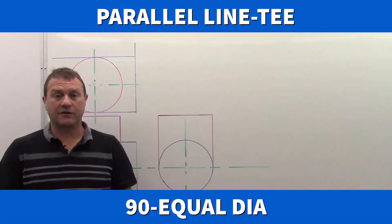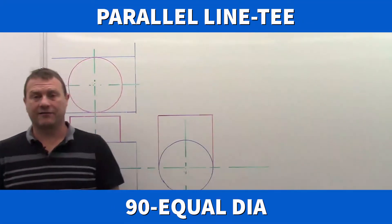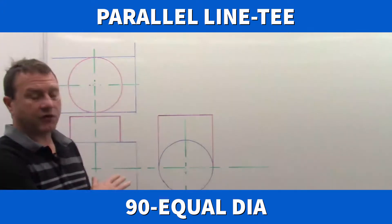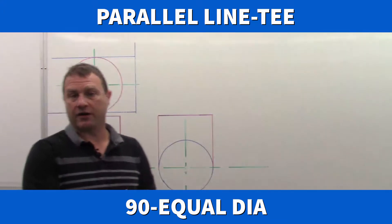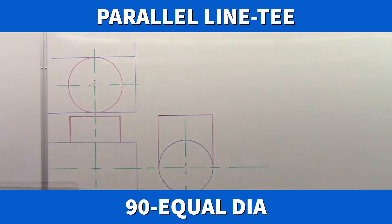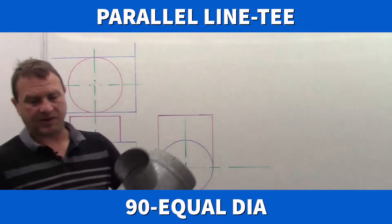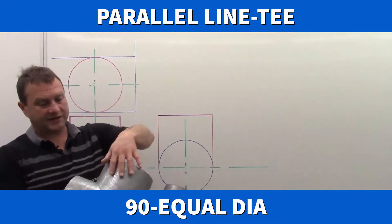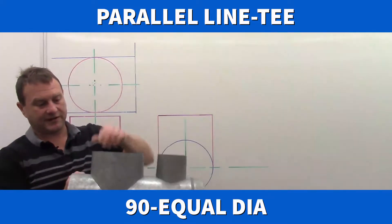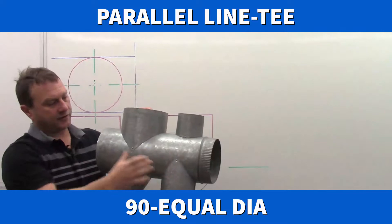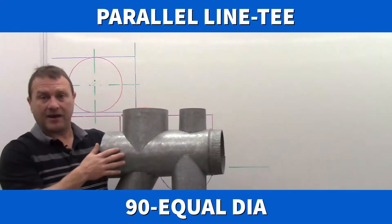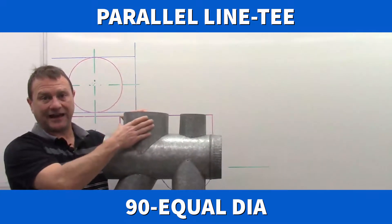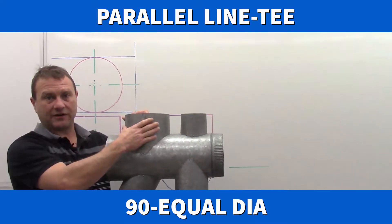Today we're going to continue on with parallel line development. We're going to look at T's. A T is a piece of pipe coming off another piece of pipe. This portion is the T, and this is the pipe. The main piece is the pipe and the takeoff or smaller piece on it is the T.